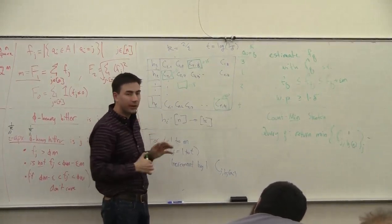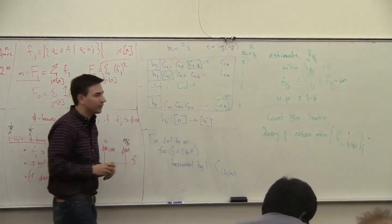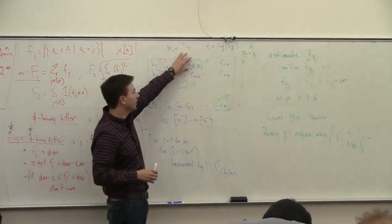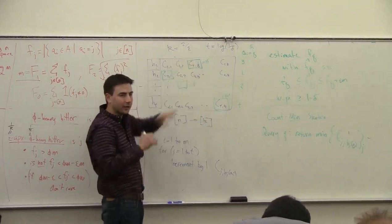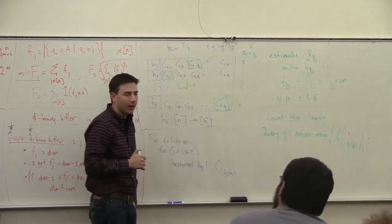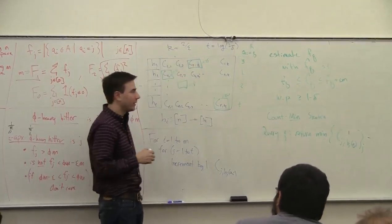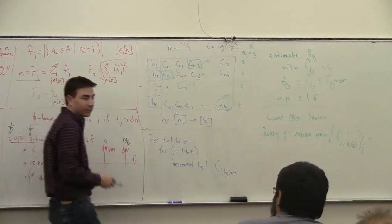But it's a very simple algorithm, and so you can use it for a lot of other things. Instead of just doing a counter here, you can add something else in this space—some other sort of more complicated data structure, maybe counting the number of distinct elements or something.